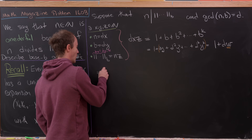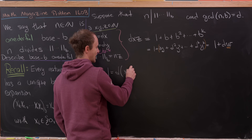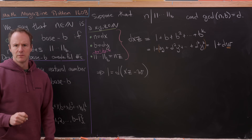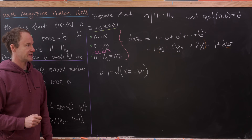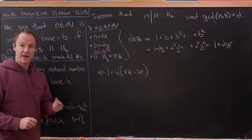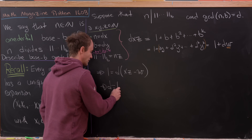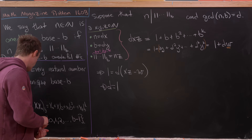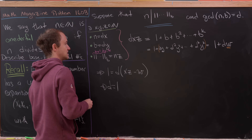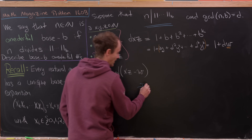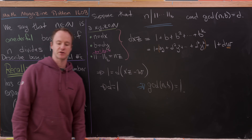Solving for 1, we get 1 = dxz minus dw, which factors as d times (xz minus w). Since 1 factors as a product of positive integers, and the only way that works is if both factors equal 1, we conclude d equals 1. So we've shown: if n divides the string of ones in base b, then the gcd of n and b equals 1 — they are relatively prime.